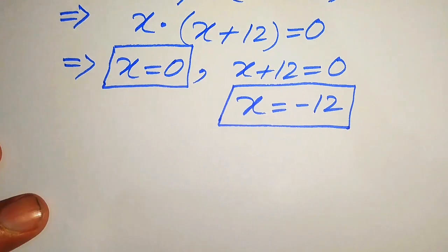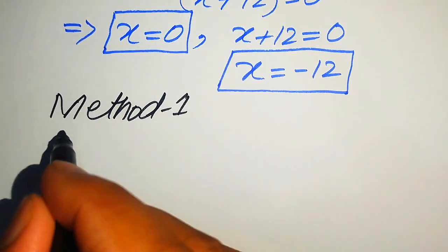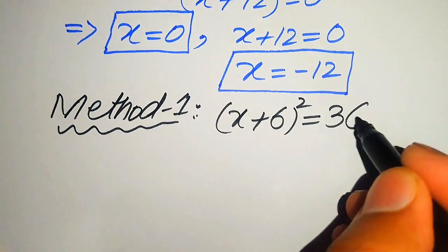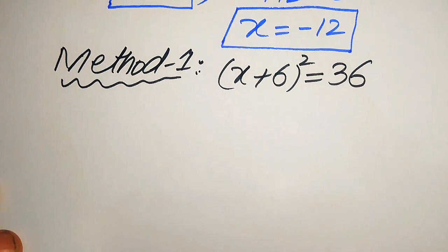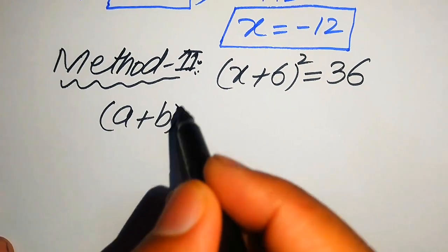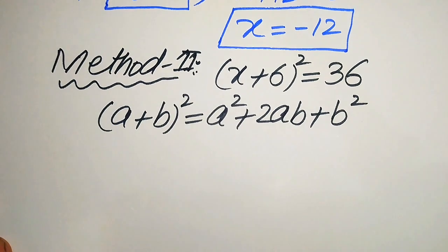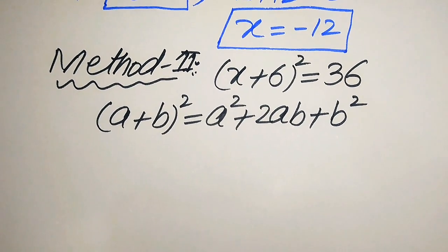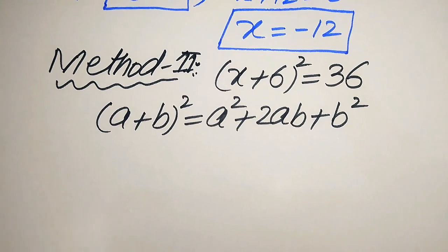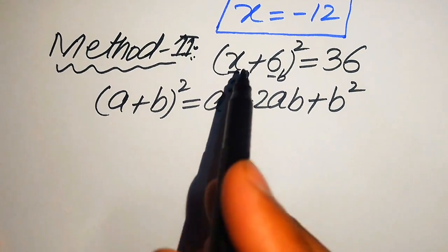Now we solve the same problem using the second method. The given equation is (x + 6)² = 36. Here we apply the algebraic formula (a + b)² = a² + 2ab + b². Our a = x and b = 6, so we expand the left hand side using this formula.